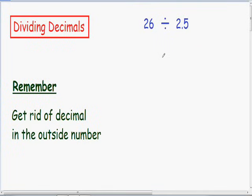So now I want to go over a tricky example of dividing decimals. Here we have 26 being divided by 2.5. So first I'll just set this up using long division. We have 26 on the inside being divided by 2.5 on the outside.